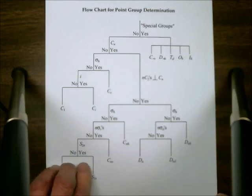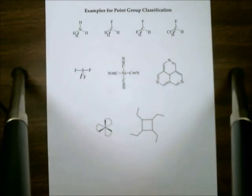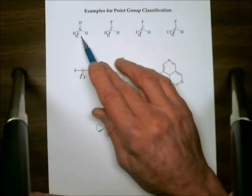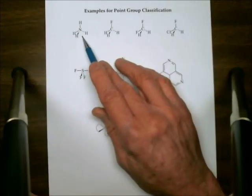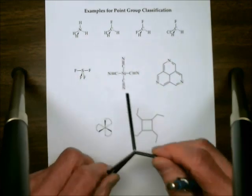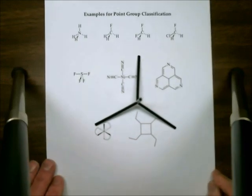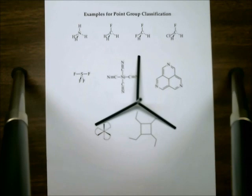Now let's apply this to some molecules. The first example is NH4+, the ammonium ion, which is isostructural with methane — it's a perfect tetrahedron. This is one of the special high-symmetry groups, so we don't need to work through the flowchart; it's Td directly.